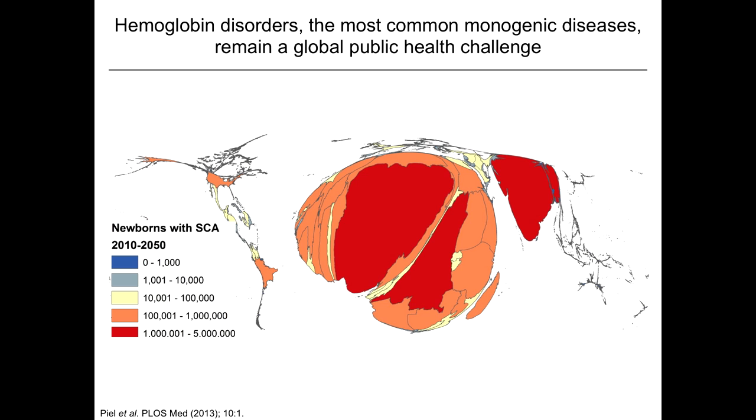Disorders of the globin chains constitute the most common monogenic diseases in the world, including sickle cell disease and the thalassemia syndromes. They affect individuals whose ancestors occupied the malarial endemic world, and it's anticipated that for sickle cell anemia alone, there'll be hundreds of thousands of newborns born over the next 30 years, with tens of millions of infants anticipated in Africa and South Asia over coming decades.